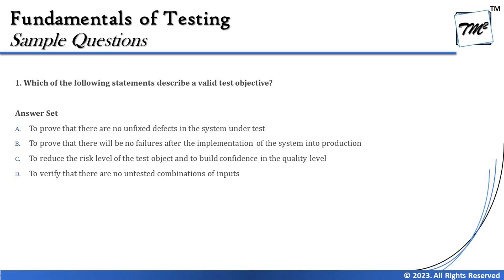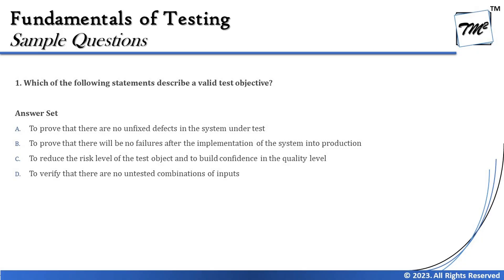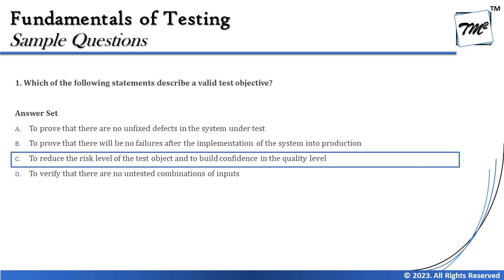We should also cross-check with Option D, which says: to verify that there are no untested combinations of inputs. That contradicts Principle Number Two — exhaustive testing is impossible. We cannot try every combination to test a particular scenario. So looking at all four options, the right answer here is C: to reduce the risk level of the test object and to build confidence in the quality level, which is a valid objective of testing.